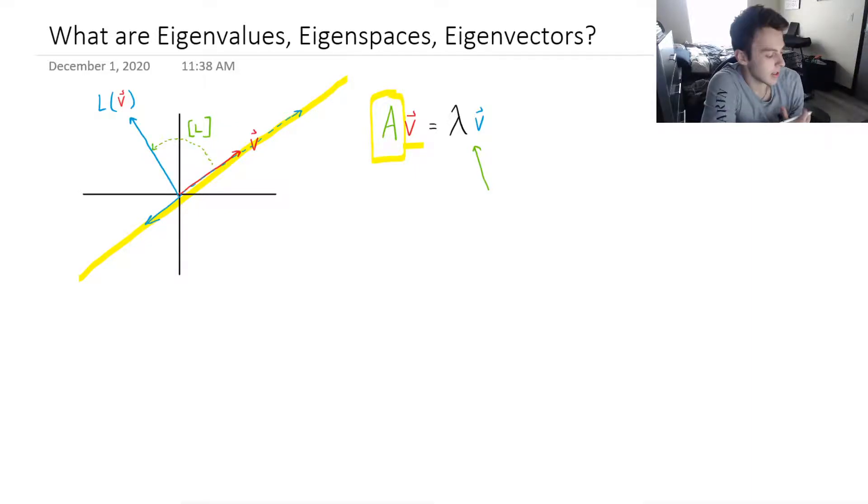And then the eigenspace is the set of all vectors v where this holds true. So you might think that for every value of lambda that we can find, because in this example, I've only shown one vector v that works.